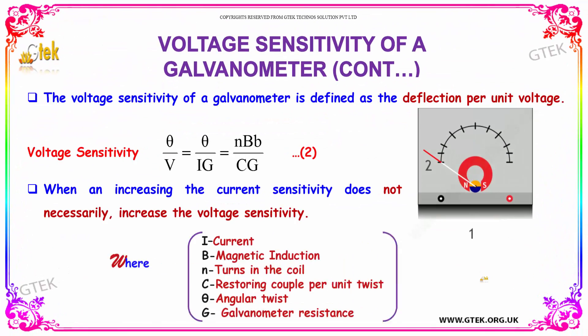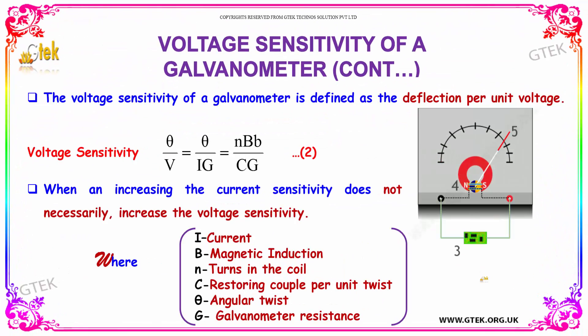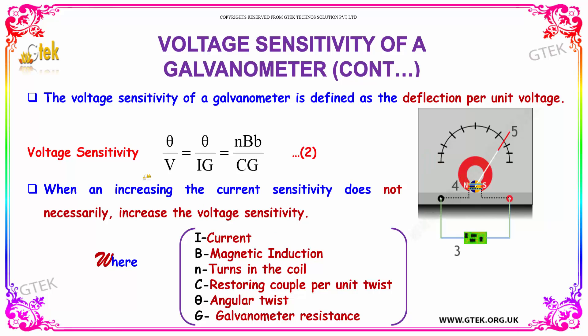The voltage sensitivity of the galvanometer is defined as the deflection per unit voltage. The voltage sensitivity is theta divided by v, where v equals i into g. So, voltage sensitivity equals theta divided by i into g, which is equal to n into B into b divided by c into g.